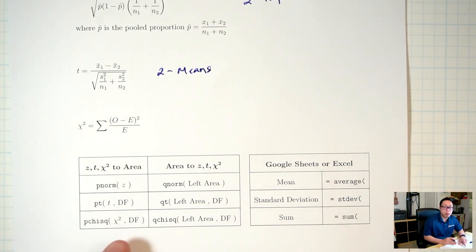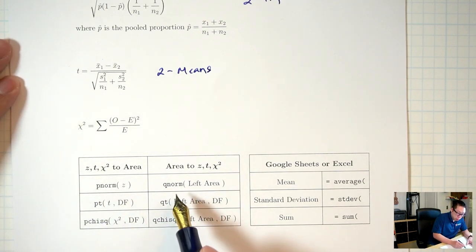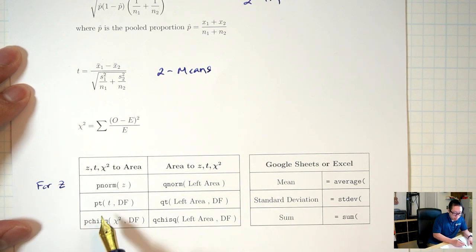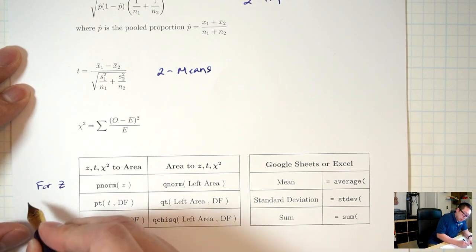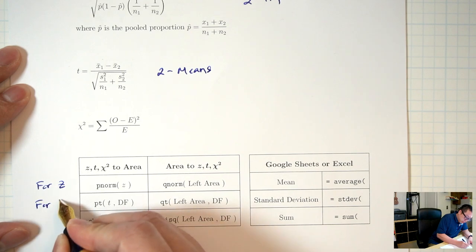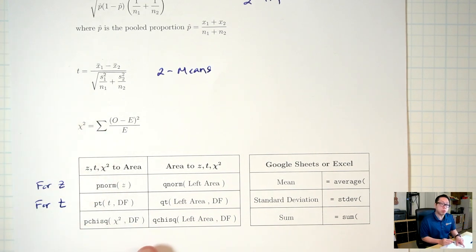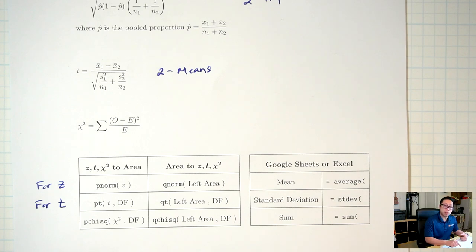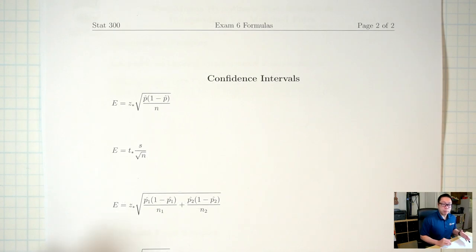At the bottom, the left box contains commands in R that we'll need. We've seen most of these before. pnorm and qnorm are for the z situation. pt and qt are for the t situation. The last row is for the chapter 12 stuff, so we'll skip that for now. On the right side are commands in Google Sheets or Excel. We'll be using this today, so let me come back to this later. The second page has all my formulas for confidence intervals. We won't be talking about these today — we'll cover them in the next lecture.